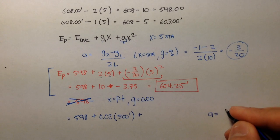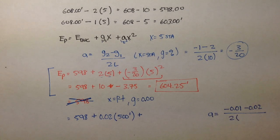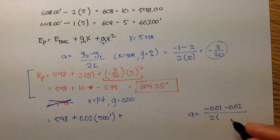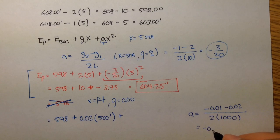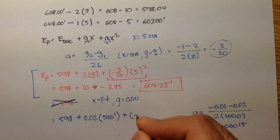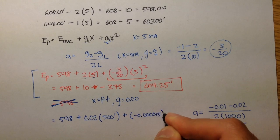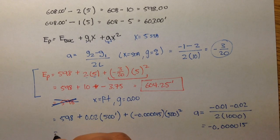Plus our A term. A would be negative 0.01 minus 0.02 over 2 times the length. The length is in feet. So, 10 times 100 is 1,000. We're going to get A is equal to negative 0.000015. If you plug that in, negative 0.000015 times X squared, or 500 squared, we should get the same thing, 604.25 feet.